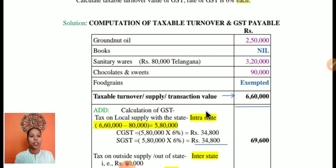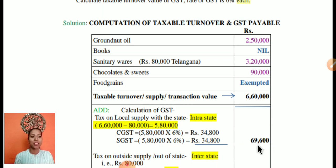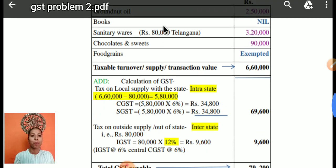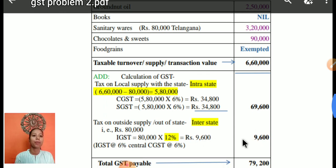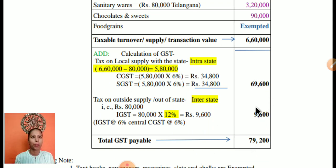For the calculation of GST — taxable supply intra-state means within the state. Out of 6,60,000, rupees 80,000 is an out-of-state supply. So 6,60,000 minus 80,000 gives 5,80,000 for within-state supply, on which CGST at 6% and SGST at 6% apply, giving 69,600 total. For the supply to Telangana, IGST applies: 80,000 into 12% equals 9,600. Add both GST amounts to get the total GST payable. This taxable turnover plus GST gives the total payable amount.